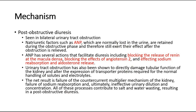Another cause is post-obstructive diuresis, seen in bilateral urinary tract obstruction. Natriuretic factors such as ANP, which are normally lost in the urine, are retained during the obstructive phase and still exert their effect after obstruction is relieved. ANP facilitates diuresis by blocking the release of renin at the macula densa, blocking the effects of angiotensin 2, and affecting sodium reabsorption and aldosterone release. Urinary tract obstruction has also been shown to directly damage tubular function and alter the expression of transporter proteins required for normal handling of solutes and electrolytes.